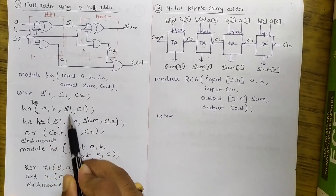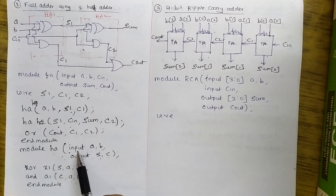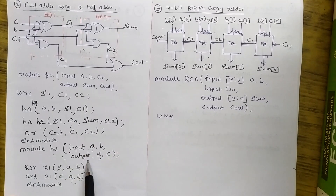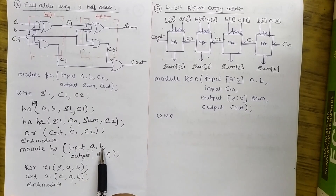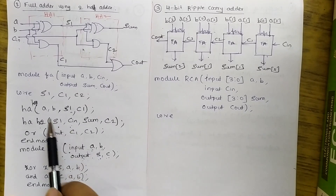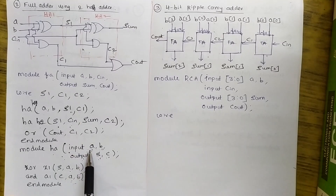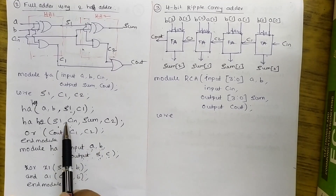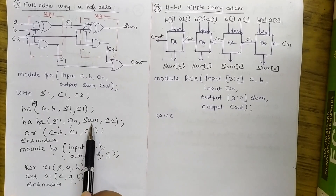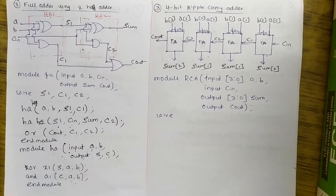This is called ordered instantiation. In ordered instantiation you need to follow the order of the ports specified. A and B are the inputs, S and C are the outputs. A is mapped with A, S is mapped with S1, C is mapped with C1. When calling it a second time, B is mapped with C1, S1 is mapped with sum, and C is mapped with C2. One more way of instantiation is named instantiation.